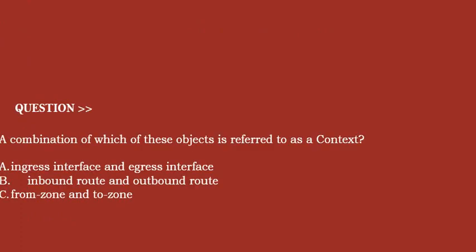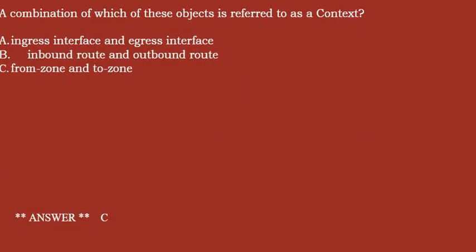Next question: A combination of which of these objects is referred to as a context? Option A: ingress interface and egress interface. Option B: inbound route and outbound route. Option C: from zone and to zone. Correct answer is option C.